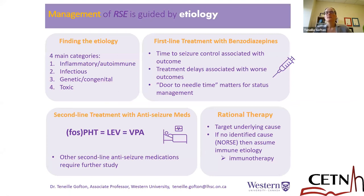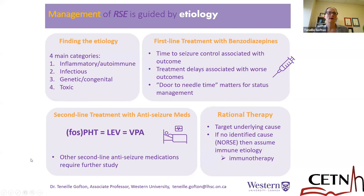To summarize part two: management of refractory status is really guided by the etiology. There are four main categories — inflammatory or autoimmune, infectious, genetic or congenital, and toxic causes. First line treatment for status itself is benzodiazepines, and we want to avoid treatment delays — we have our own door-to-needle time in epilepsy. Best evidence for second line treatment suggests we can choose phenytoin, levetiracetam, or valproic acid, whichever is best for your patient and obtained fastest. Rational therapy aims at treating the underlying cause while treating the seizures.